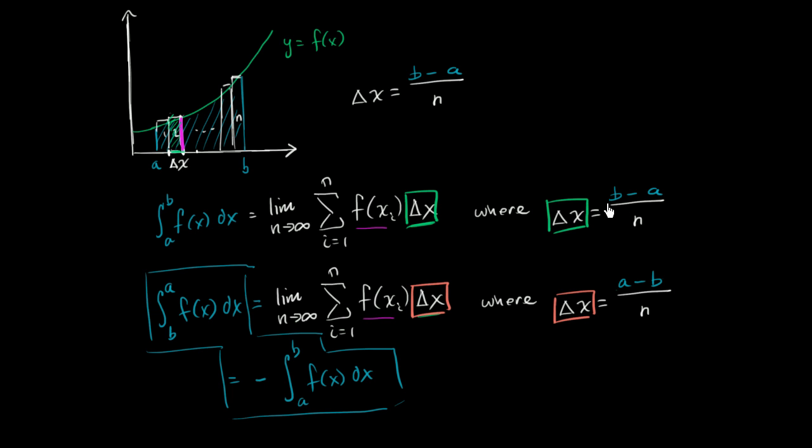it really just comes from this idea. Instead of delta x being b minus a, if you swap the bounds of integration, it's going to be a minus b. You're going to get the negative delta x, which is going to give you the negative of this original value. Once again, this is a really useful integration property when you're trying to make sense of some integrals and even sometimes solve them.